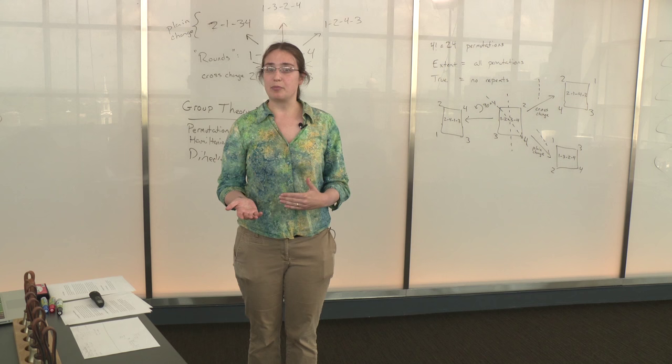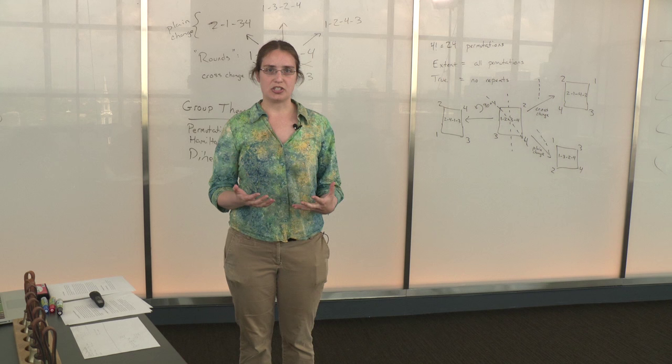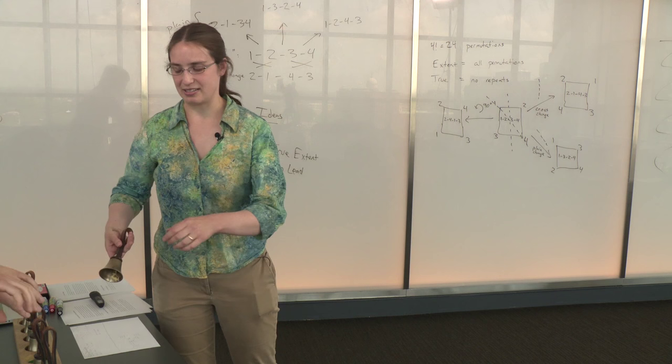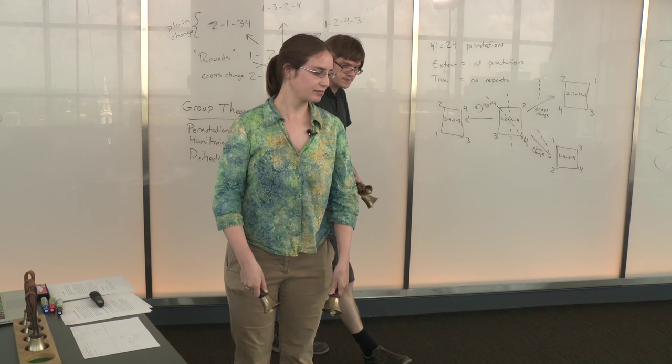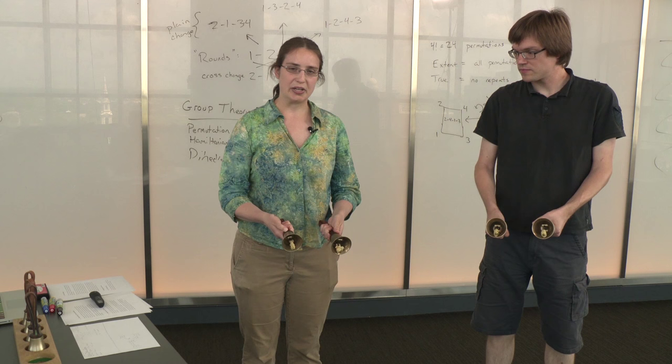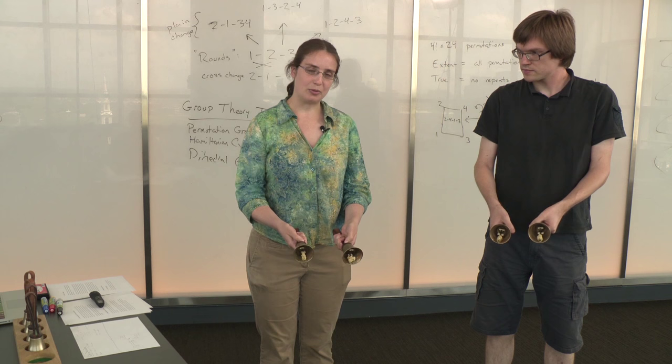And this is again one of the very common patterns that we use in change ringing. So let us perform for you plain bob minimus again on our hand bells so you can hear how it sounds. We'll ring the bells just a little bit faster this time, so it may be a little bit hard to keep track of what's going on. But we're ringing exactly those changes in that order. Again, we'll ring rounds twice before we start and then we'll start swapping the order of the bells. Here we go.